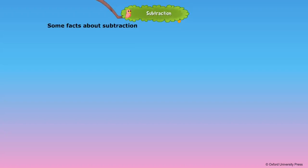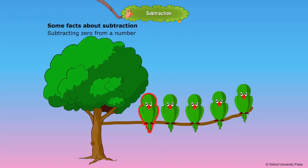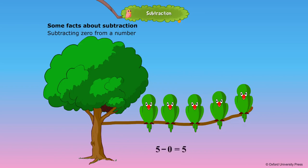Subtraction. Some facts about subtraction. When we subtract 0 from any number, the number remains the same. For example, 5 minus 0 is equal to 5.